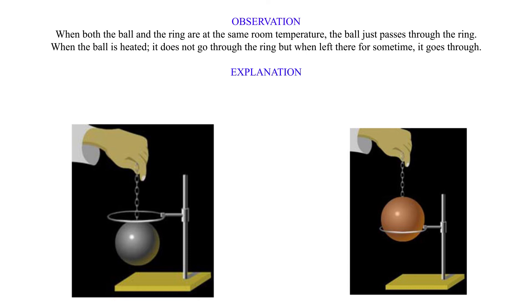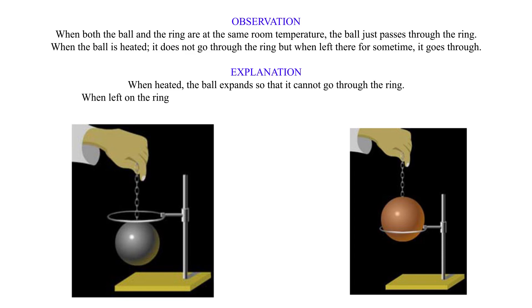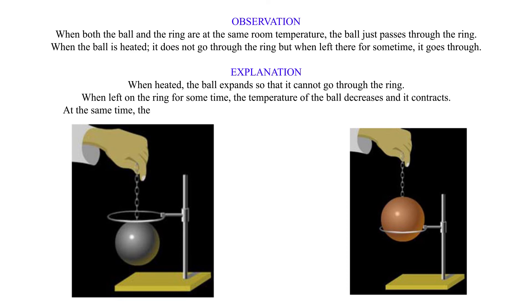Explanation. When heated, the ball expands so that it cannot go through the ring. When left on the ring for some time, the temperature of the ball decreases and it contracts. At the same time, the temperature of the ring increases and it expands, so that the ball goes through.